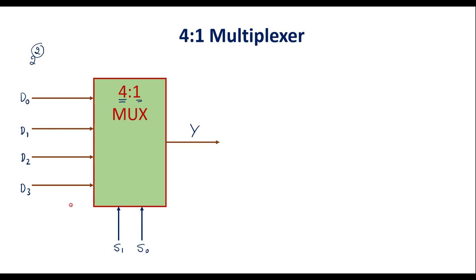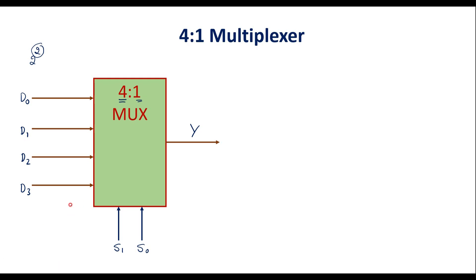The multiplexer also has an enable signal — that is, another input known as E, the enable signal. As long as the enable signal is 1, the multiplexer is active. If the enable signal is 0, then irrespective of the select lines, the output is always 0.